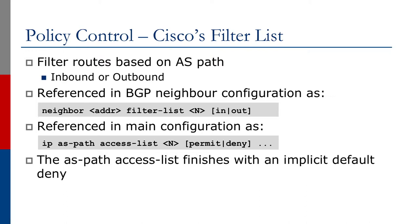It's referenced in the BGP neighbor configuration as neighbor address filter list, then a number, and then the direction, whether it's in or out. The way you create the AS path is in the main configuration: you type IP AS path access list, then a number (the same number that you're going to reference in the BGP neighbor configuration), and then either a permit or deny and then a way to match the particular AS path that you want. For Cisco IOS, the AS path access list finishes with an implicit default deny.